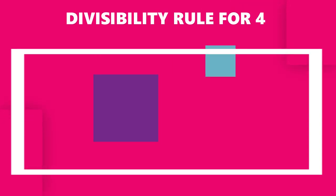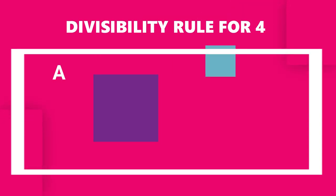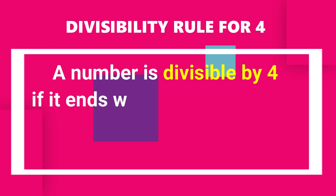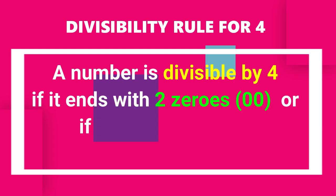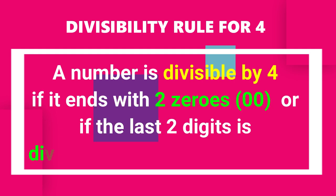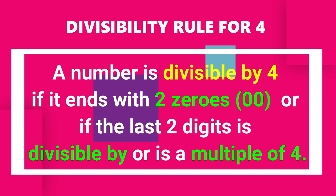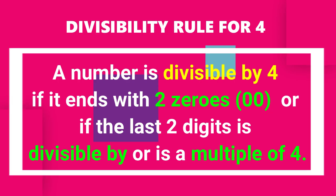Let's start with the divisibility rule for 4. A number is divisible by 4 if it ends with two zeros, or if the last two digits of the number is divisible by or is a multiple of 4.